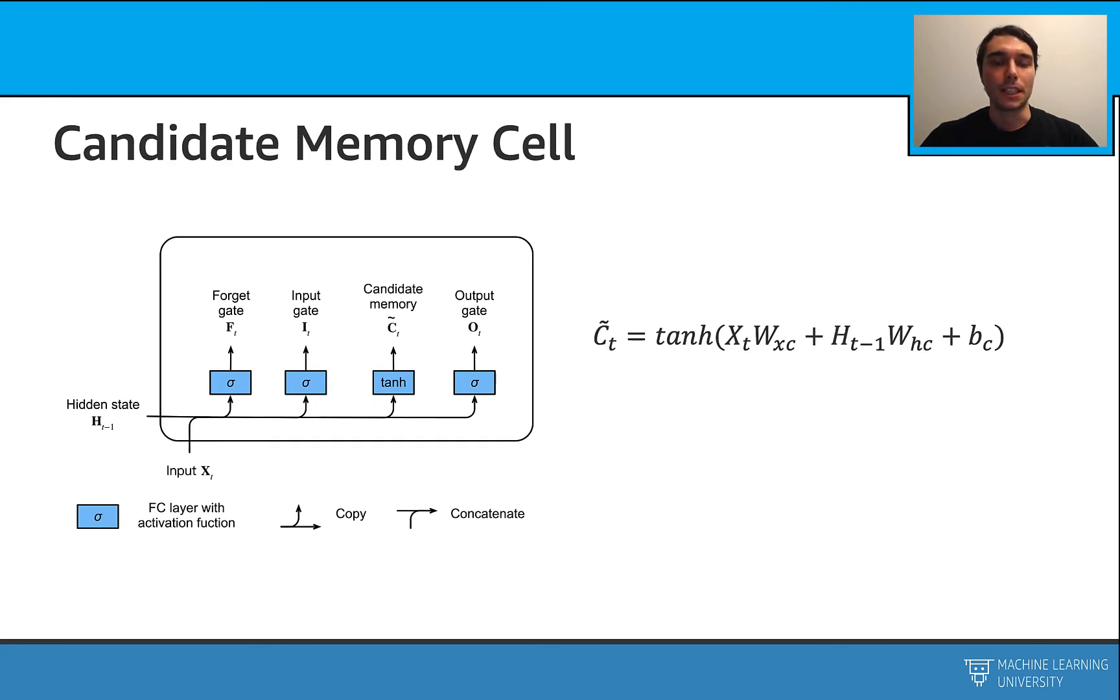We can calculate the candidate memory like this. We use the input, the previous hidden state, and a bias.